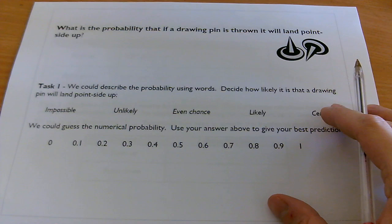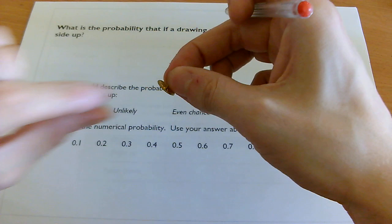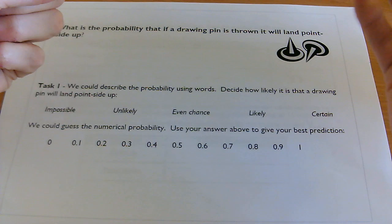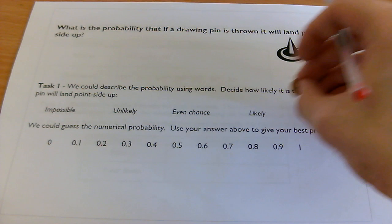So initially, we can just maybe look at a drawing pin. And by the way, if you haven't got a drawing pin, you can do this experiment with something similar, anything where you can't predict what it's going to do when it lands. So you can be creative and come up with something else if you want to use a different object. But initially, we can maybe just try and have a guess.